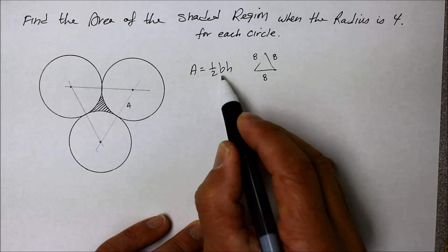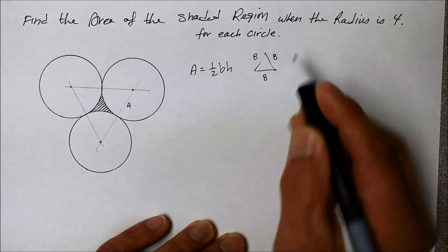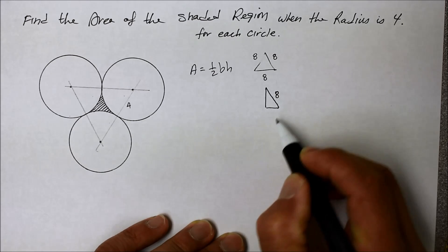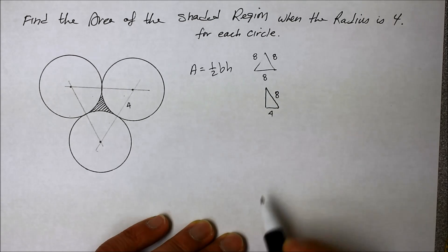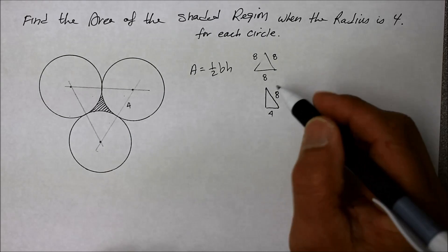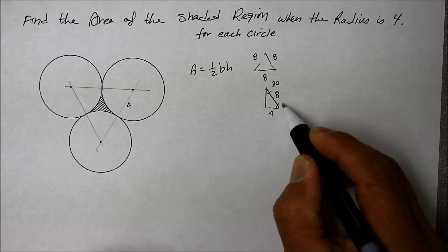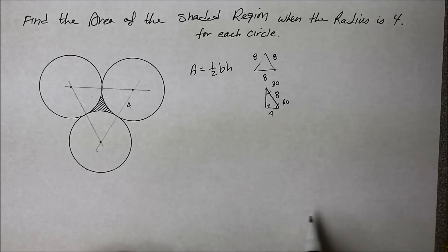To find the base, well, base is going to be, well, check it out. Here we go. If I take half of that equilateral, here's an eight, here's an eight, here's a four. And since it's an equilateral, you could either go by the 30, 60, 90 ratio.